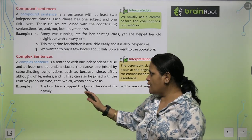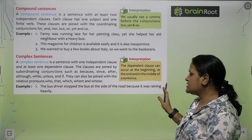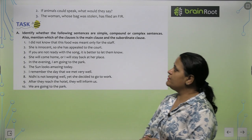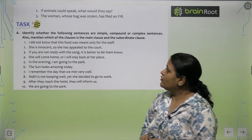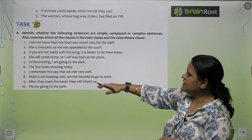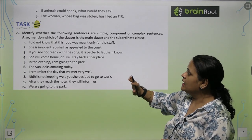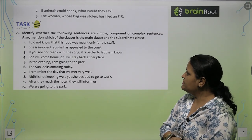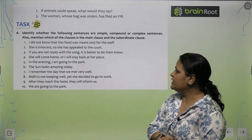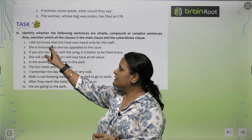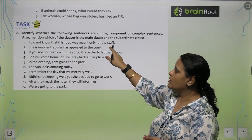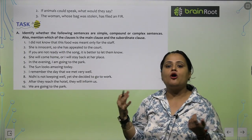For example: 'The bus driver stopped the bus at the side of the road because it was raining heavily.' Because has appeared here, making it a complex sentence. Another example: 'If animal could speak, what could they say?' And: 'The woman whose bag was stolen has filed an FIR.' Now you need to identify whether sentences are simple, compound, or complex, and mention the main clause and subordinate clause. For instance: 'I did not know that this food was meant only for the staff.' Here, 'I did not know' is the main clause, and 'that this food was meant only for the staff' is the subordinate clause — making it a complex sentence.